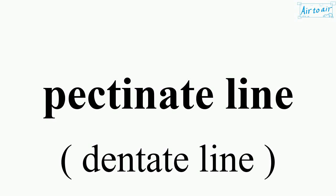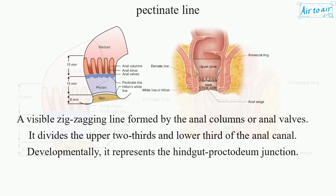Pectinate Line. A visible zig-zagging line formed by the anal columns or anal valves. It divides the upper two-thirds and lower-third of the anal canal. Developmentally, it represents the hindgut-proctodeum junction.